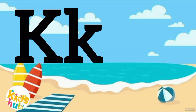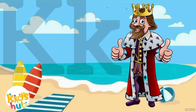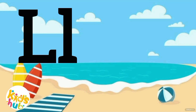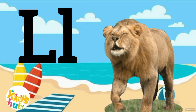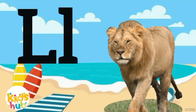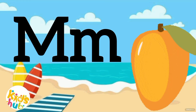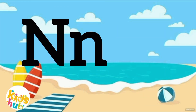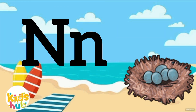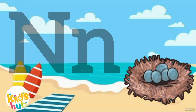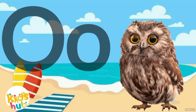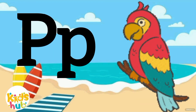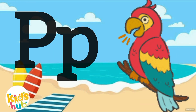K is for king, k-k-king. L is for lion, l-l-lion. M is for mango, m-m-mango. N is for nest, n-n-n-nest. O is for owl, ow-ow-ow-owl. P is for parrot, p-p-parrot.